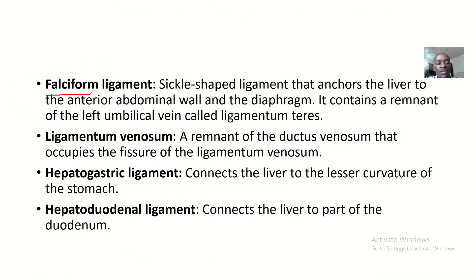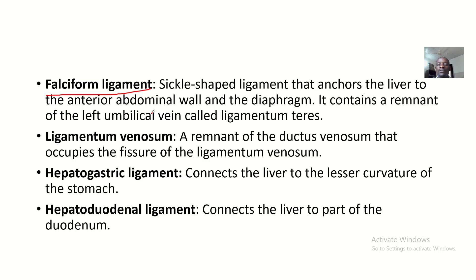Moving on, we have the falciform ligament — one of the most commonly asked-about liver ligaments. It is a sickle-shaped ligament that anchors the liver to the anterior abdominal wall and the diaphragm, sitting anteriorly and dividing the liver into the right and left lobe. It contains a remnant of the left umbilical vein called the ligamentum teres.